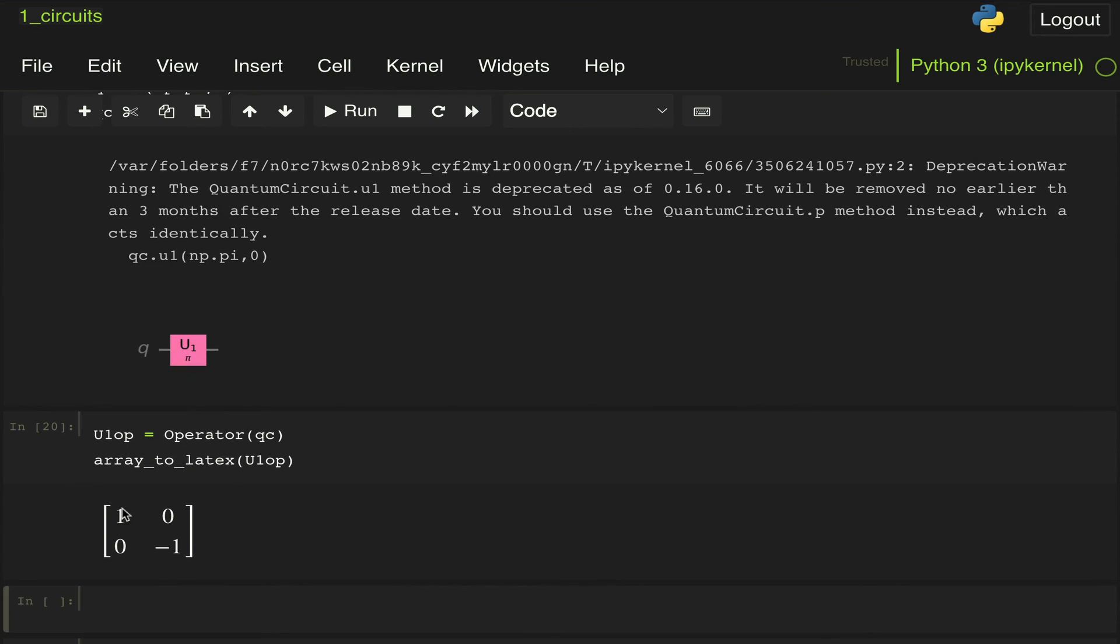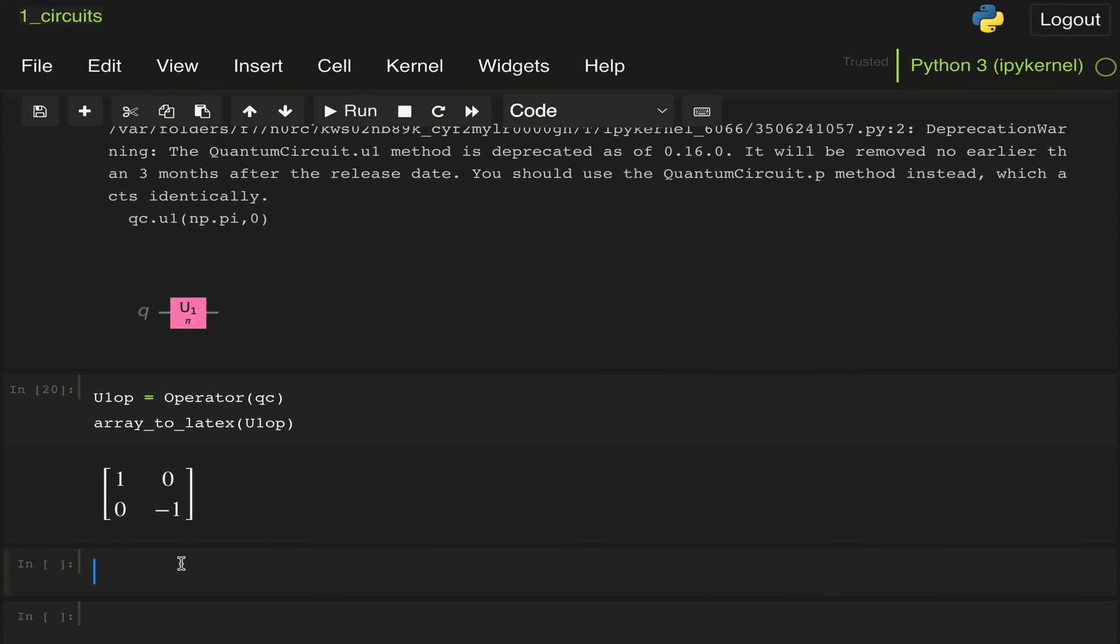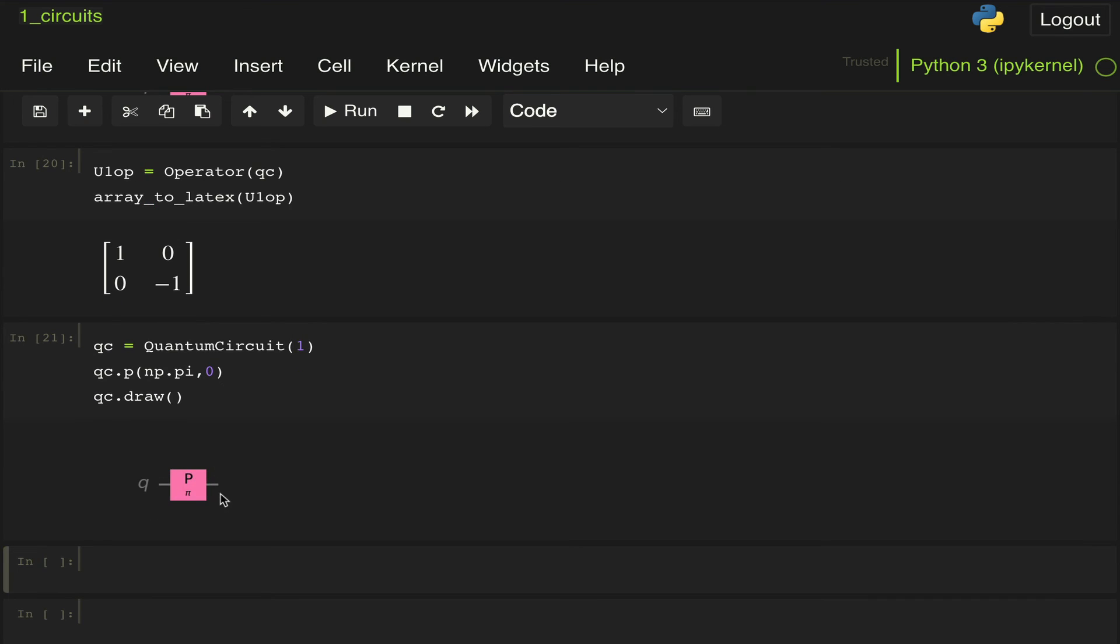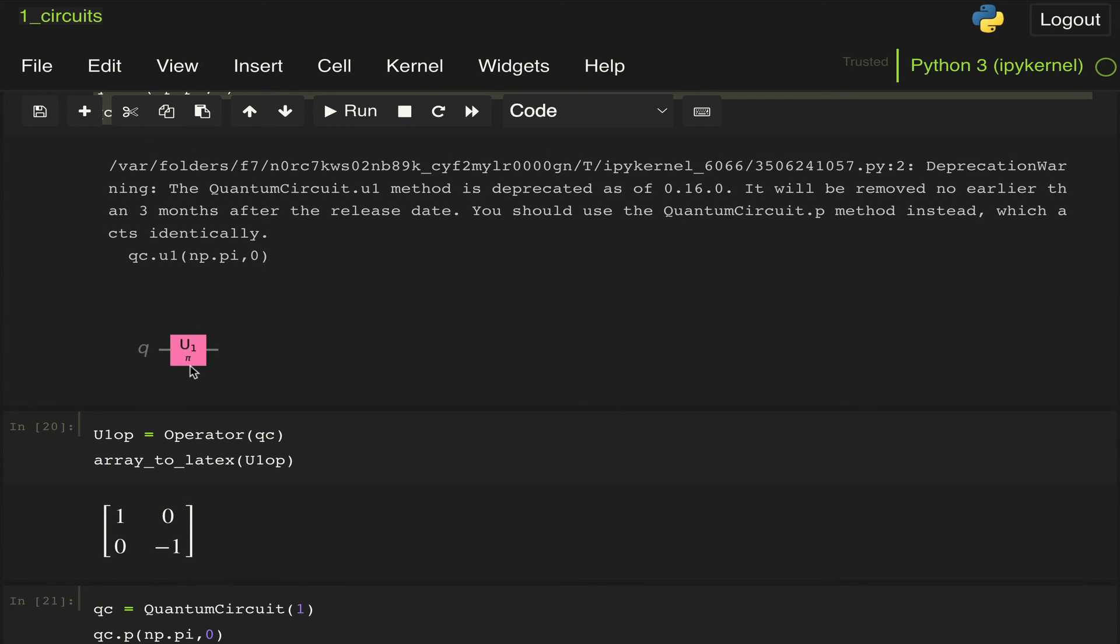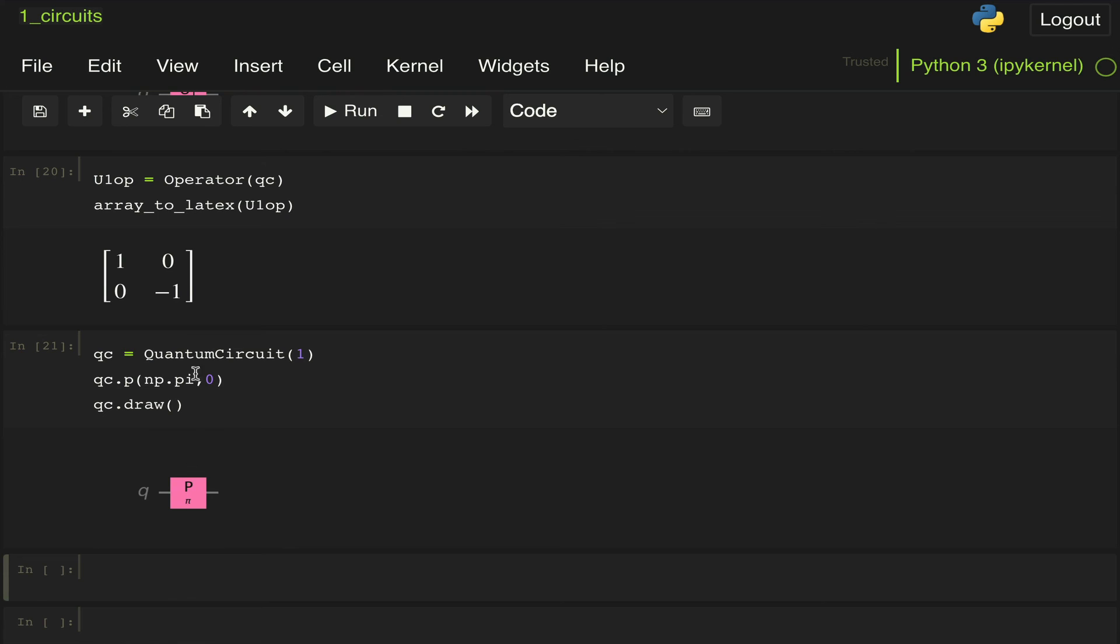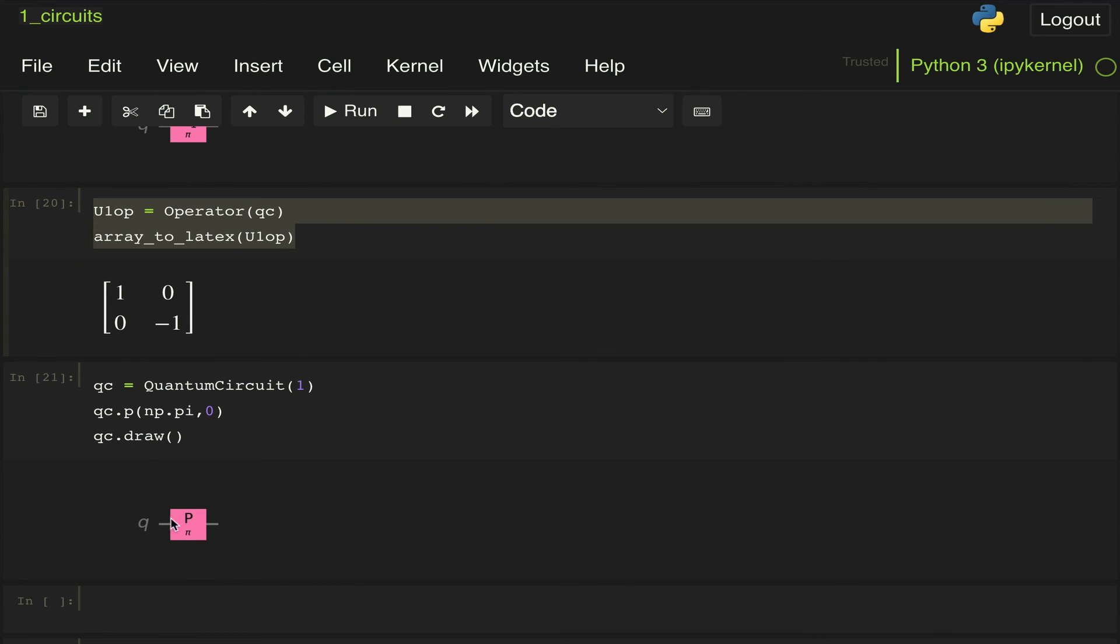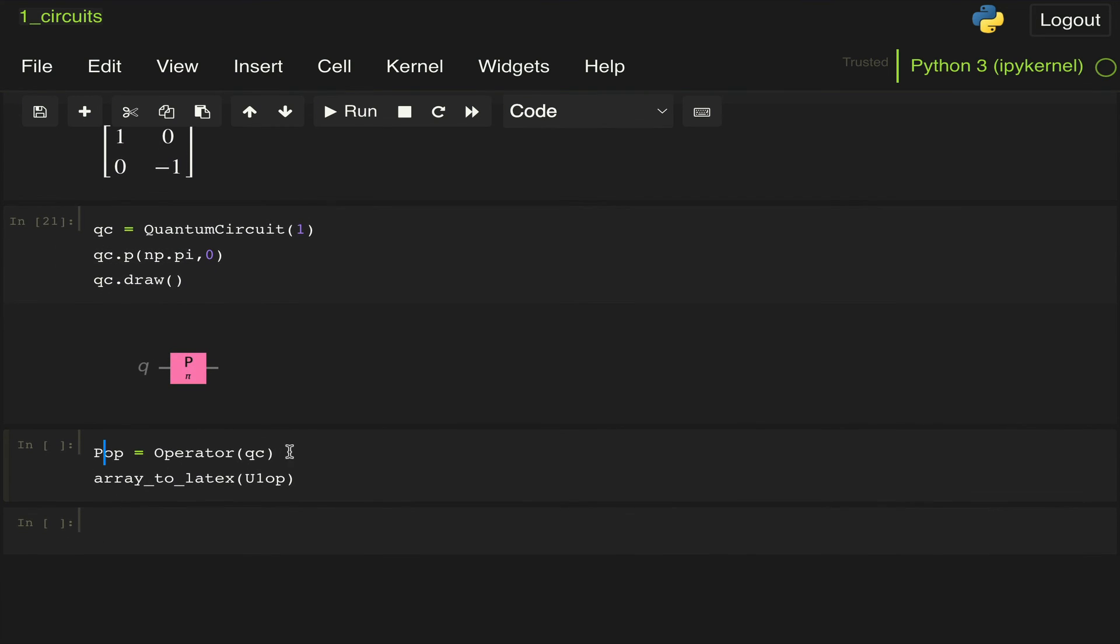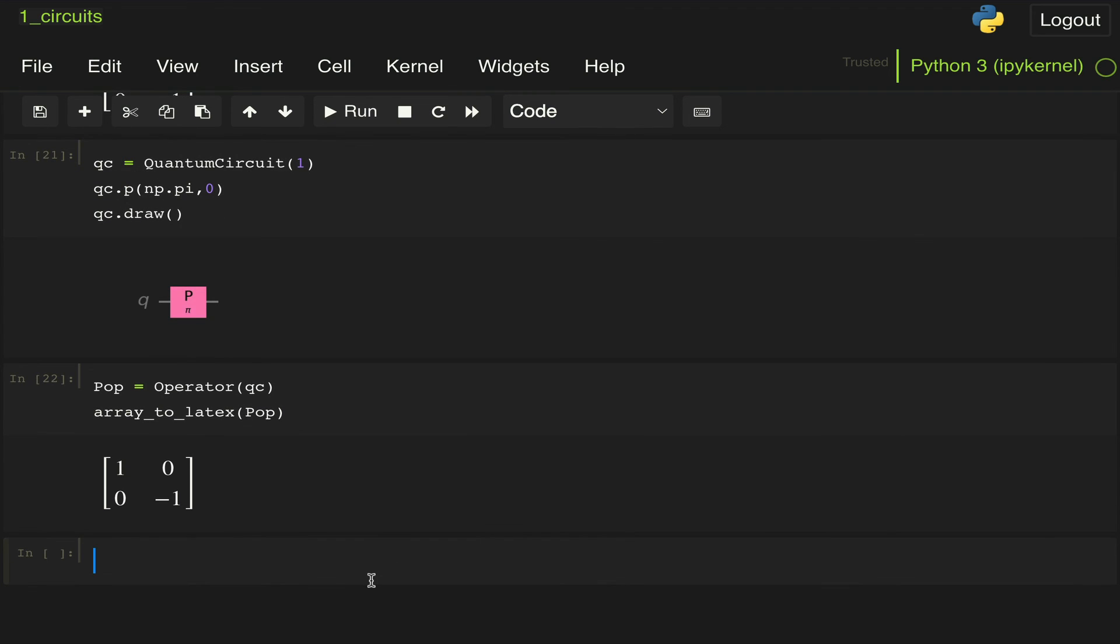What you're going to see here is we're going to get a warning message saying that this U1 gate has been deprecated and it will soon be removed from Qiskit. But we can still use it. We can do a U1 operator equal to operator QC and then print it, and we can see here that it does in fact look like the Z gate. And we can also show that we can get the exact same result if we replace this with a phase gate. So this is P, and we draw that and we get the exact same result but with no warning. This U1 gate has been replaced by this phase gate.